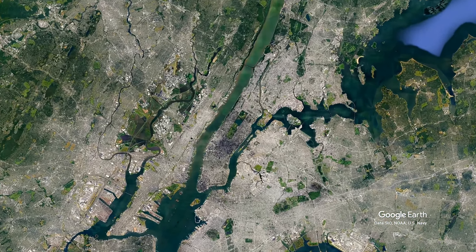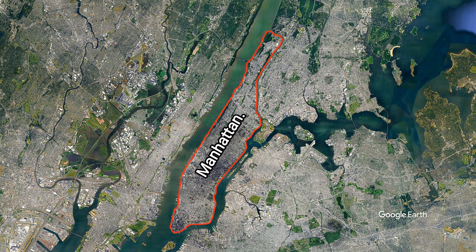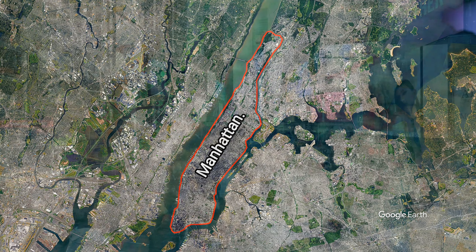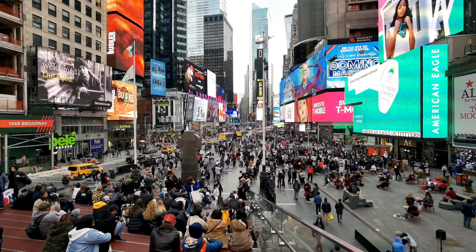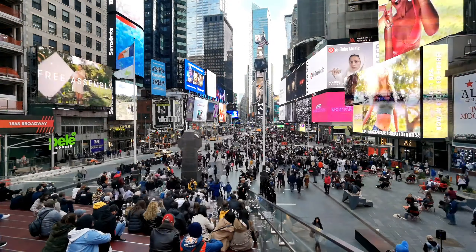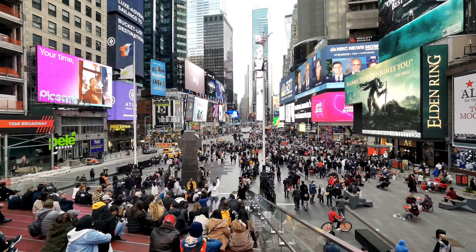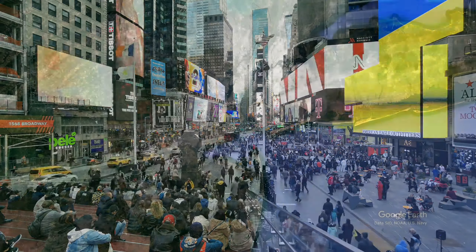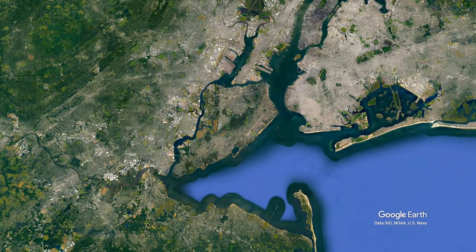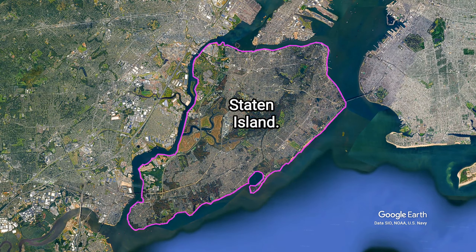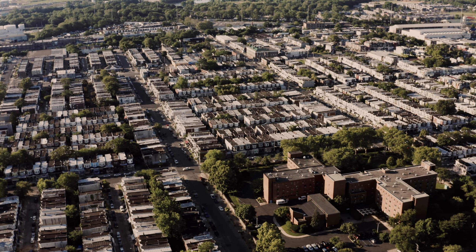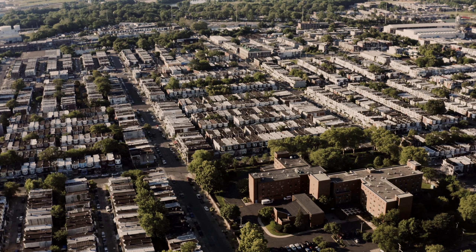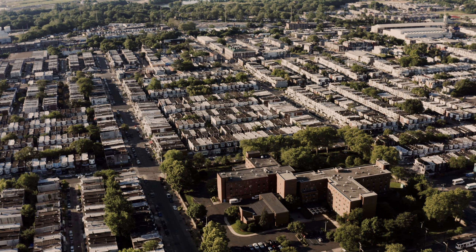Manhattan, which is the smallest borough by area, is the most densely populated one. It has a population of roughly 1.7 million inhabitants with a population density of roughly 75,000 inhabitants per square mile. Staten Island, which covers a total surface area of roughly 102 square kilometers, is the least populated of New York City's boroughs with a population of roughly 500,000 inhabitants.